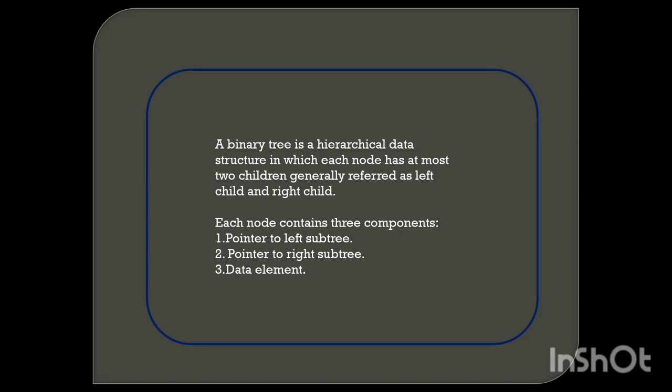A binary tree is a hierarchical data structure in which each node has at most two children, generally referred to as the left child and right child. Each node contains three components: a pointer to the left subtree, a pointer to the right subtree, and the data element. The left subtree holds values less than the data element and the right subtree holds values greater than the data element.